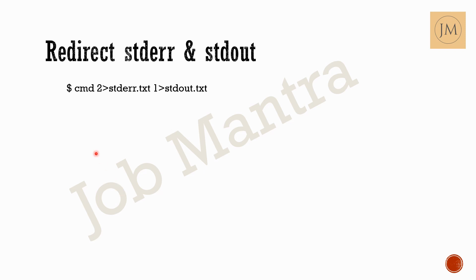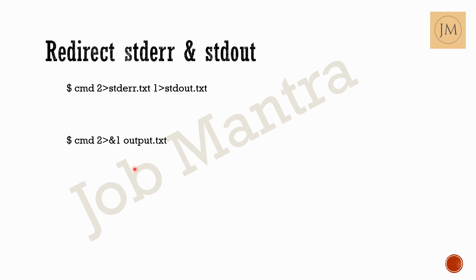If we want to redirect standard error and standard out to two different files, we can use a command like: 'command 2> standard_error.txt 1> standard_out.txt'. This redirects standard error to one file using descriptor 2, and standard out to another file using descriptor 1.